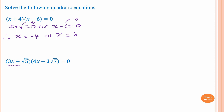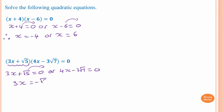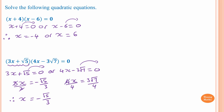Next: 3x plus root five equals zero, or 4x minus 3 root seven equals zero. Moving root five gives 3x equals negative root five. Dividing by three gives x equals negative root five over three. Moving 3 root seven gives 4x equals 3 root seven, then dividing by four gives x equals 3 root seven over four.